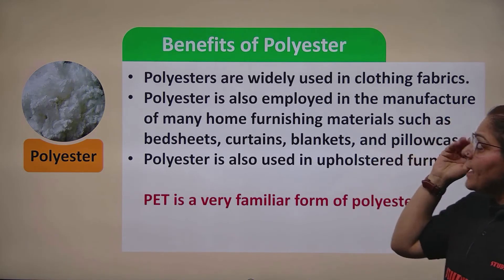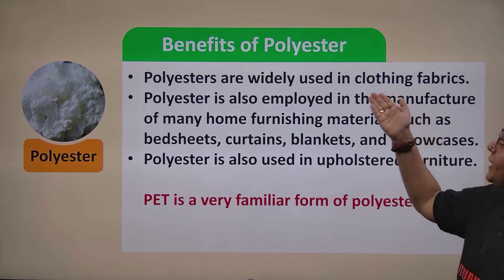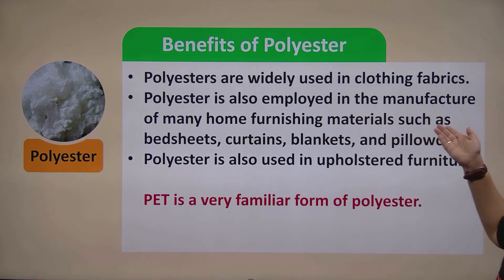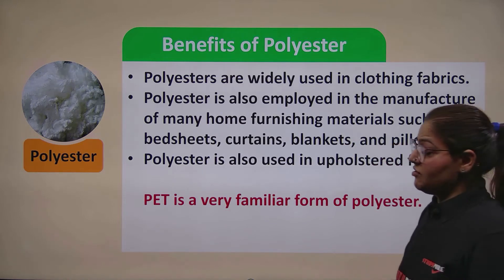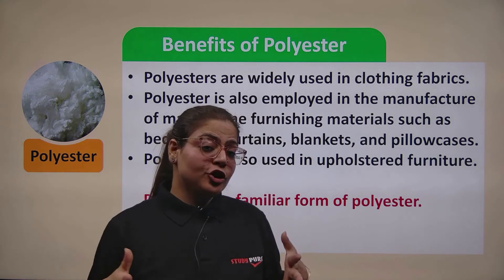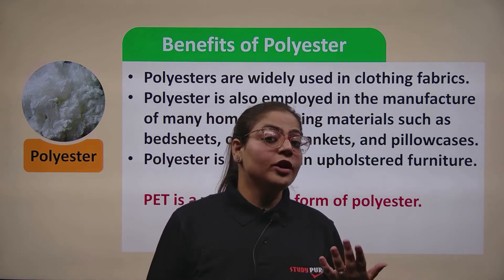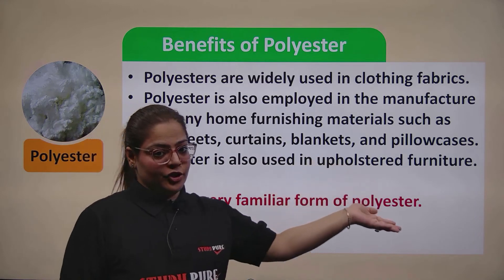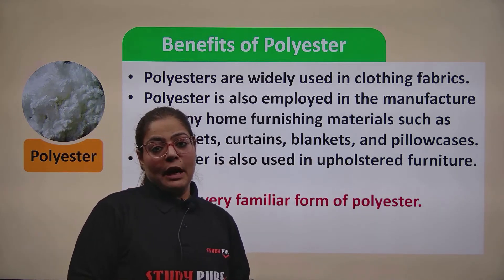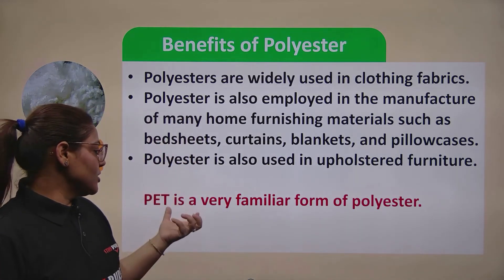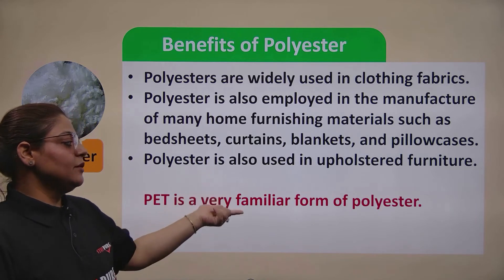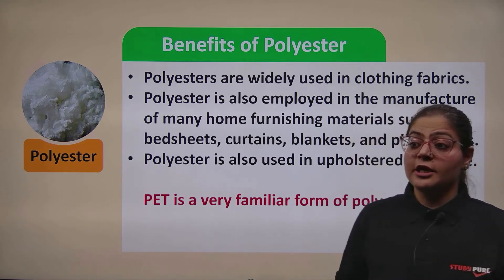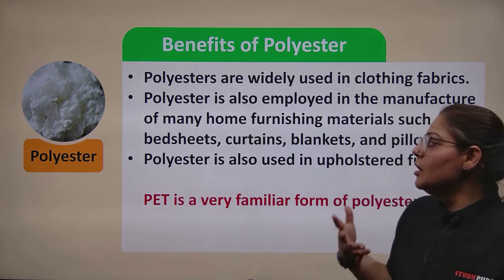Otherwise, despite so many features, people are very dependent on polyester. Benefits of using polyester: they are widely used in clothing fabrics. They are also employed in the manufacture of many home furnishing materials such as bed sheets, curtains, blankets, and pillowcases. Just imagine — home furnishing is used in every house, so we are highly dependent on it. Polyester is also used in upholstered furniture and plumbing pipelines. PET, a very familiar form of polyester, is widely used. There are so many applications of PET and polyesters for you to explore.